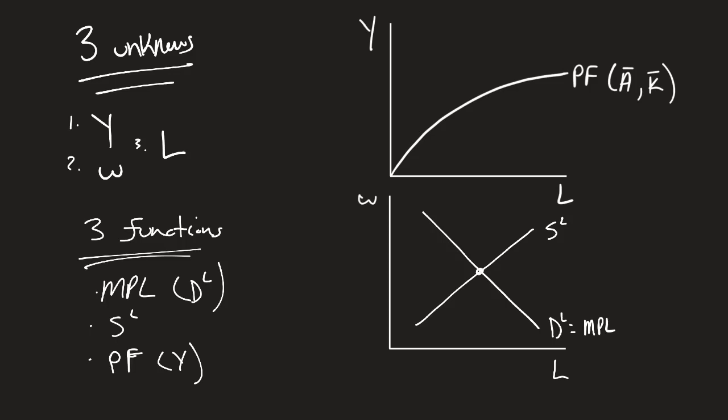Notice how we can solve out on this bottom labor market for the full employment level of employment, which gives us a market clearing wage. And then we plug that back into our production function, which we have A and K fixed, and we can figure out our Y star.